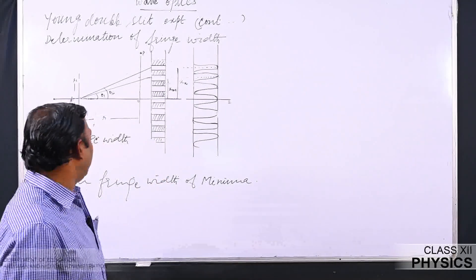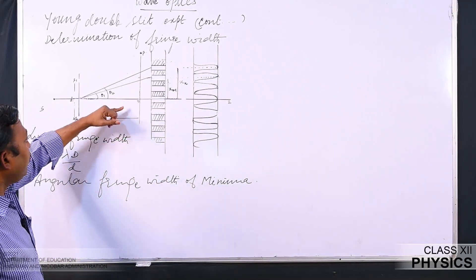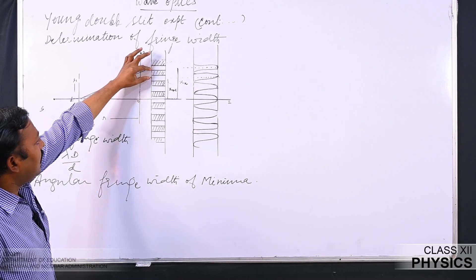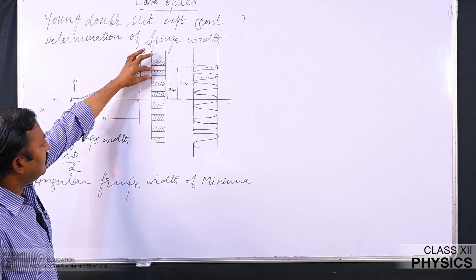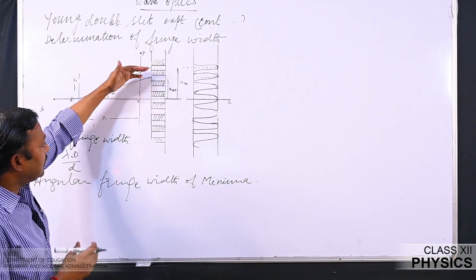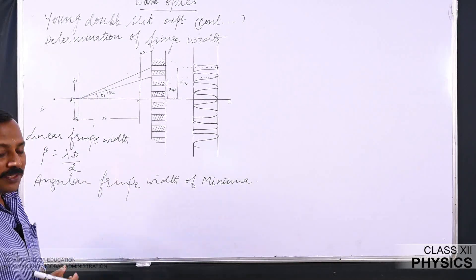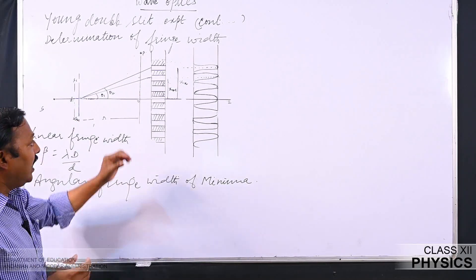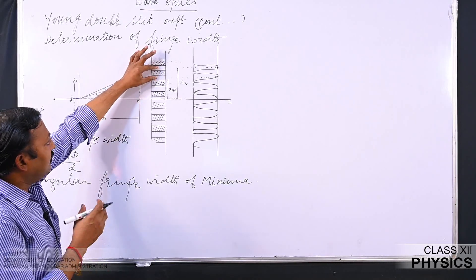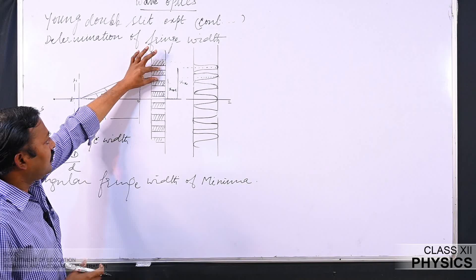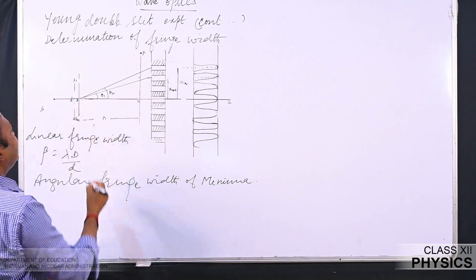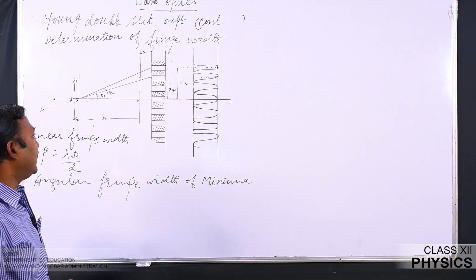Now we will try to find out the angular fringe width of fringes. Angular fringe width means the angle subtended by consecutive fringes at the center — the angle that a fringe, whether dark or bright, forms at the central point is called the angular fringe width.